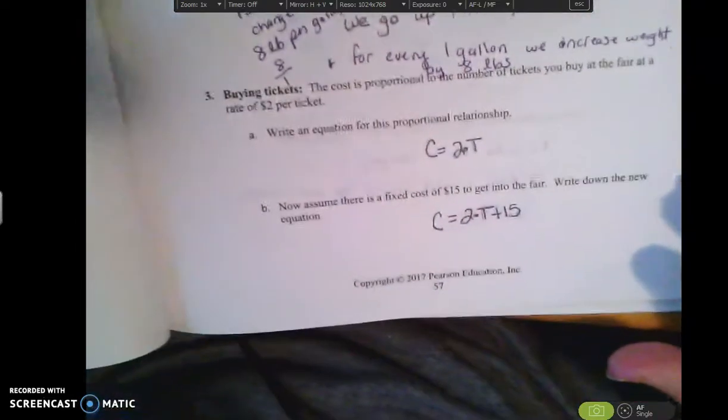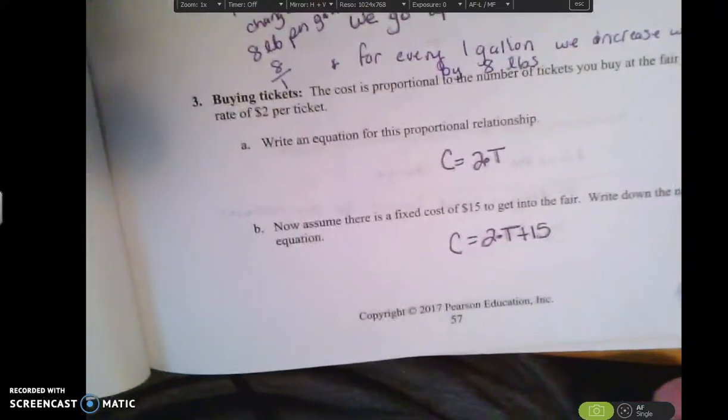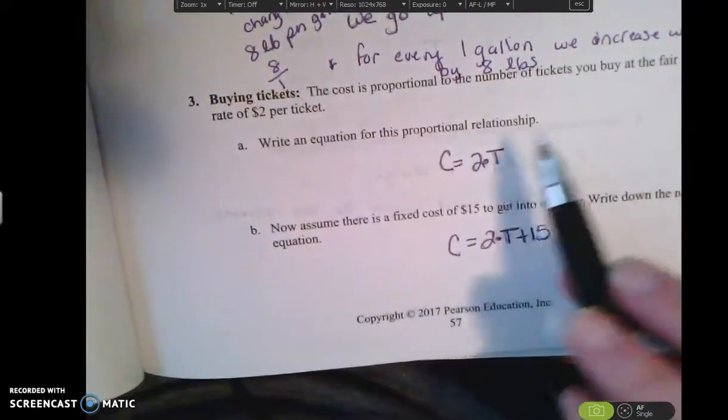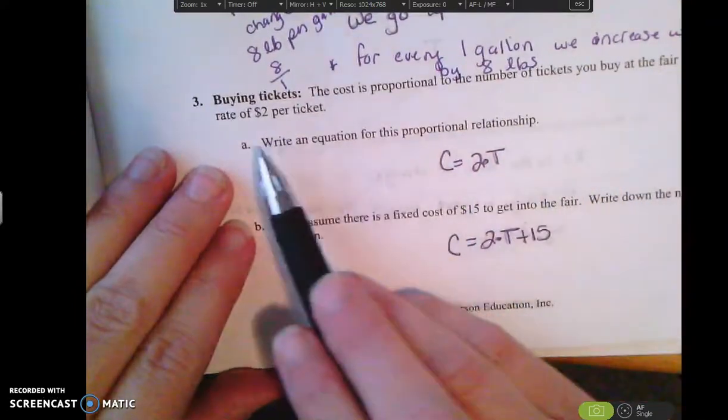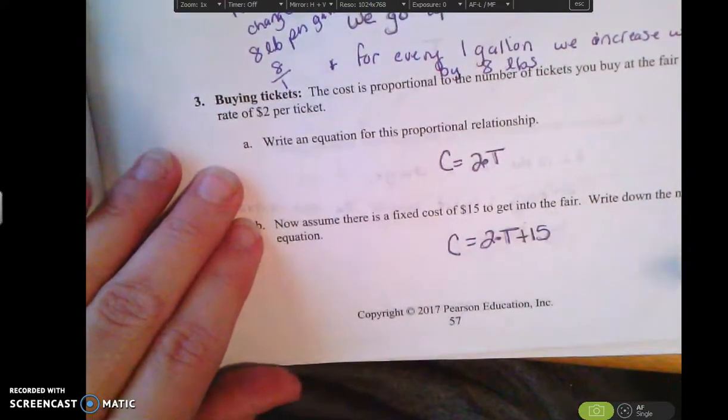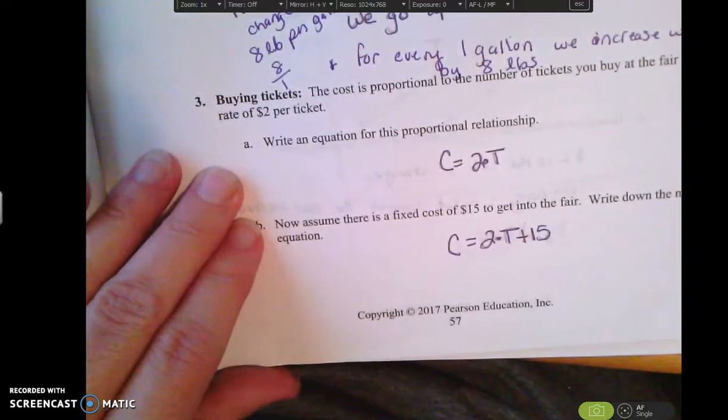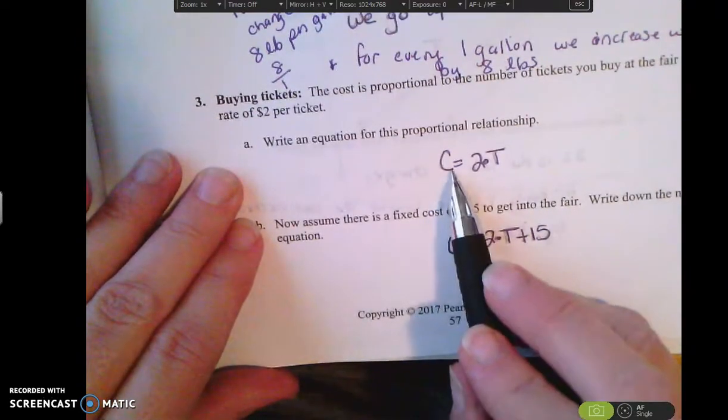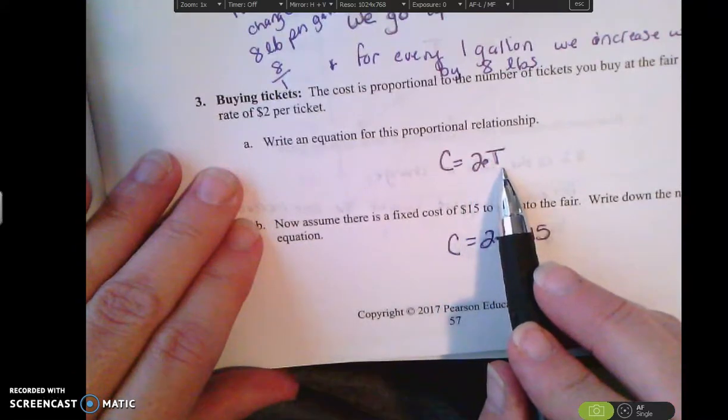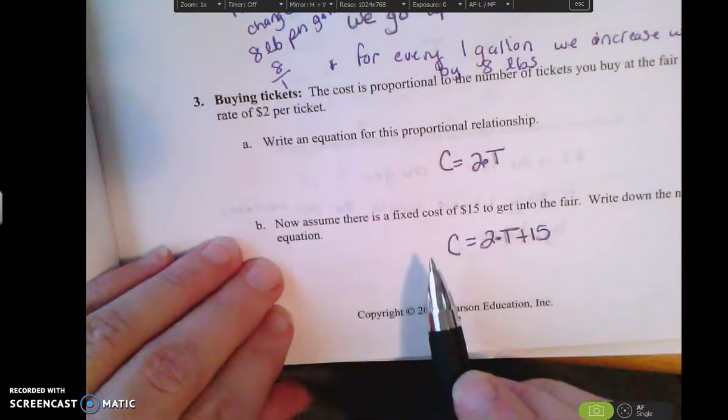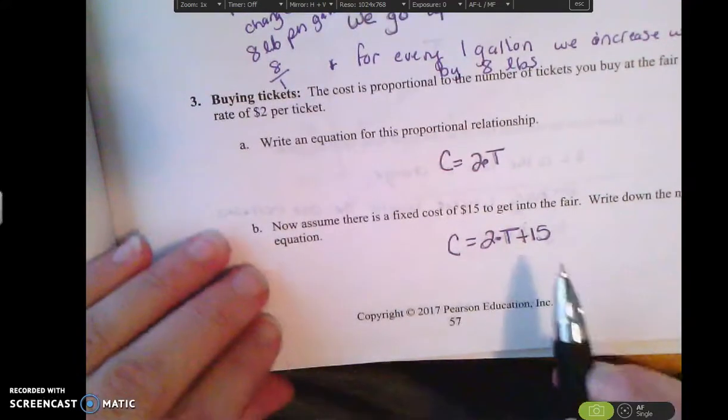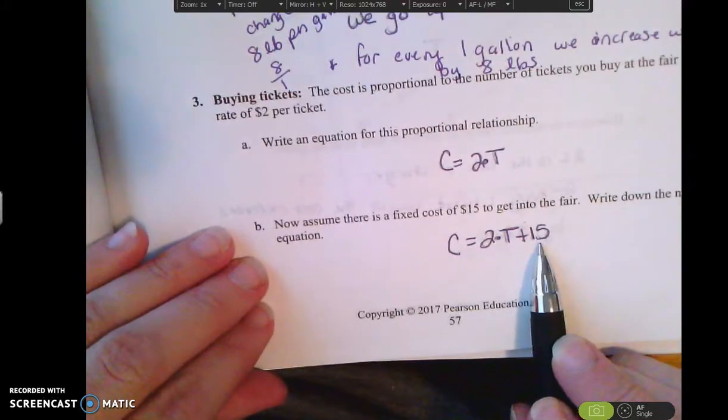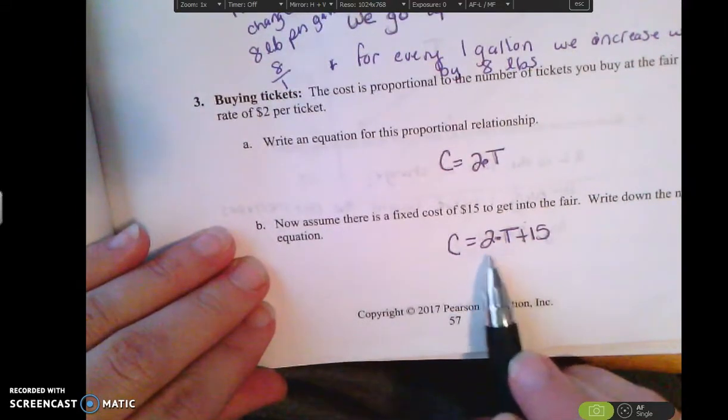So here's another example. We're buying a concert ticket, or a fair ticket, I'm sorry. The cost is proportional to the number of tickets that you buy at the fair at a rate of $2 per ticket. So for every ticket I buy, I have to pay $2. So the cost is equal to 2 times T. Now, what if I have to pay $15, maybe parking fee or whatever to get into the fair. So I have $15 as a flat rate, plus I still have to pay the $2 for every ticket.